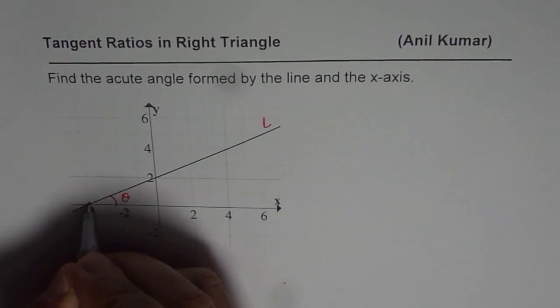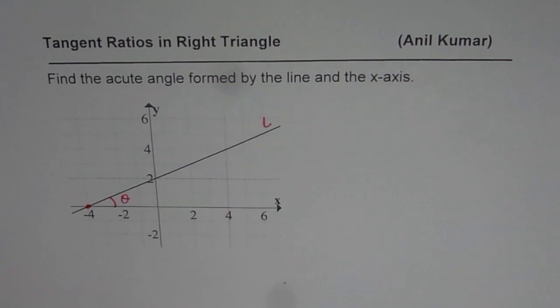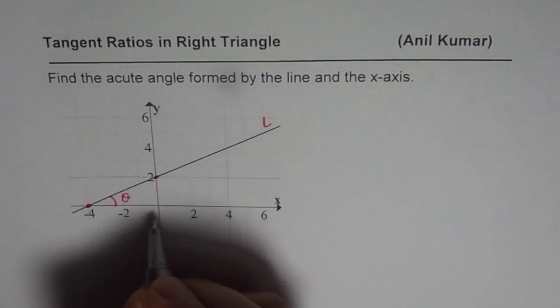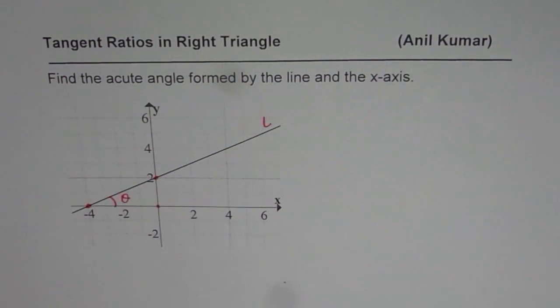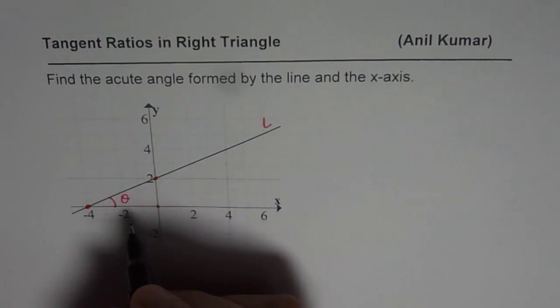This x-intercept is a very good point, which is at minus 4 and the y-intercept 2 is also a good point and the origin. So, these three points could be used to find the trigonometric ratio tan theta and from there we can find what theta is.